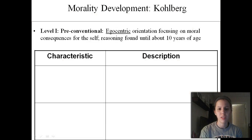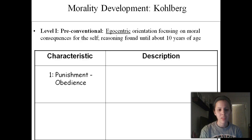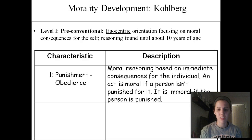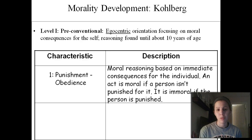The first stage is called pre-conventional, and this covers up until a child is about age nine. The whole pre-conventional stage is very egocentric — it's all about the kid. There are two characteristics that classify this stage. The first is punishment and obedience, meaning that something is moral if they do not get punished for it, and if they get punished for it, then it's immoral. Not only do little kids think like this, but adults can too.